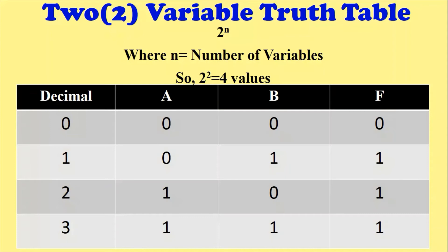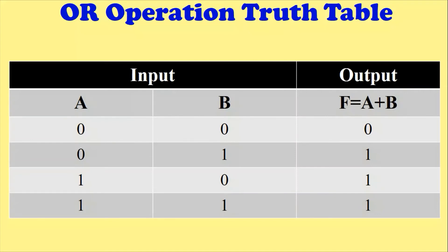If you want to display decimal value one, set A equals zero and B equals one. For decimal two, set A equals one and B equals zero. For decimal three, set both A and B to one. So starting from zero to three, you fill in all four combinations of A and B. The inputs are A and B, and the output is on the rightmost column.